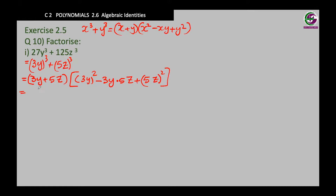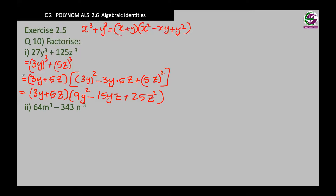Now let's expand. It is 3y plus 5z — no change in the first bracket. In the second bracket, 3 squared y squared is 9y squared, minus — that's why I always ask you to put a bracket so you don't forget — 3 times 5 is 15yz, plus 5 squared z squared is 25z squared. And that's it — we are done.